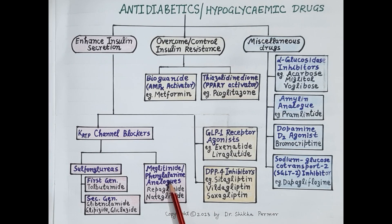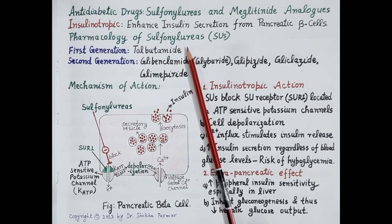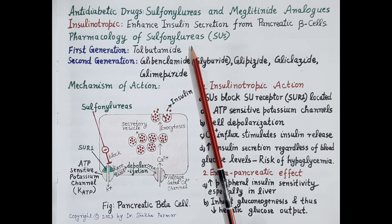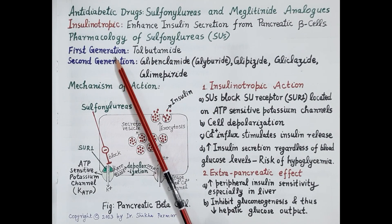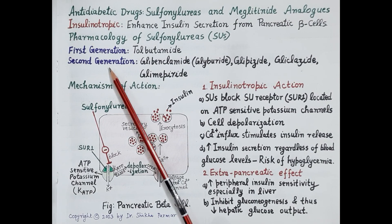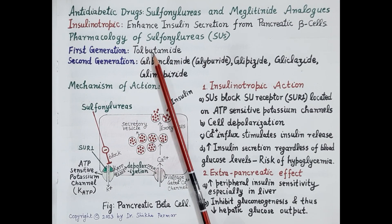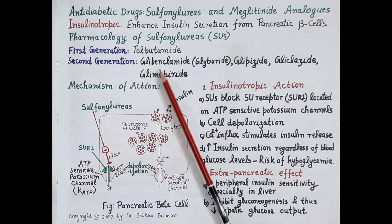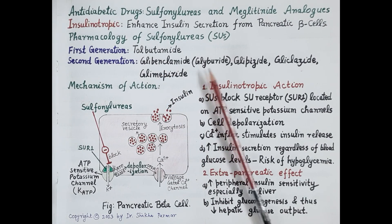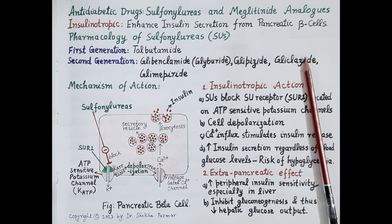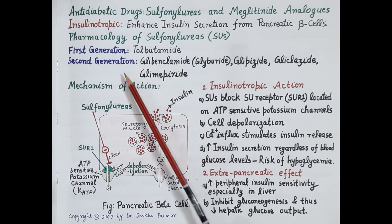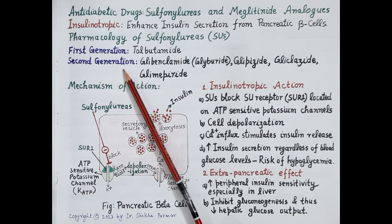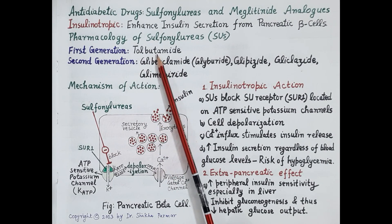Let's first discuss pharmacology of sulfonylureas. All sulfonylureas have similar pharmacological properties and are classified as first generation and second generation sulfonylureas. Tolbutamide is a first generation sulfonylurea. Second generation sulfonylureas include glibenclamide (also known as glyburide), glipizide, gliclazide, and glimepiride. Second generation sulfonylureas are more potent and clinically superior, and thus are used clinically; tolbutamide is used infrequently.